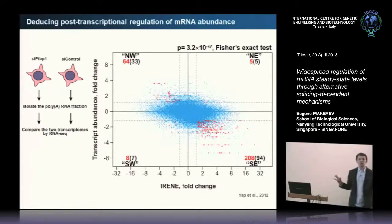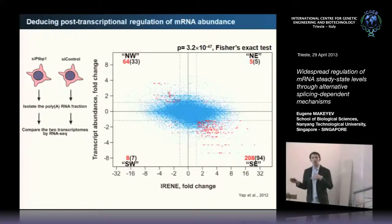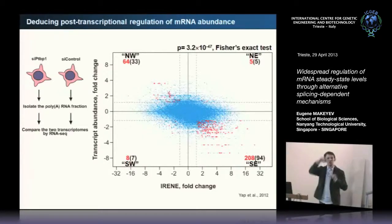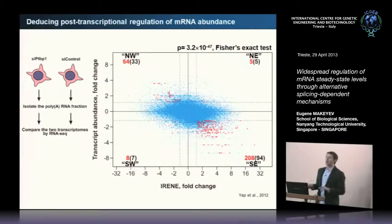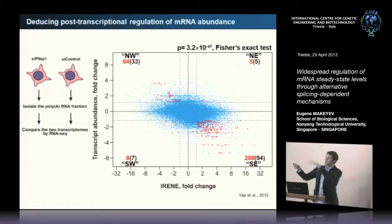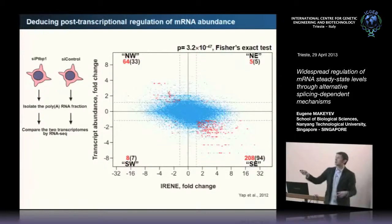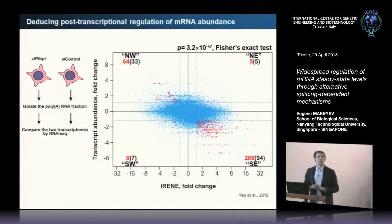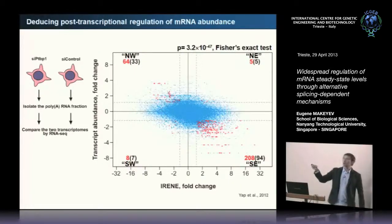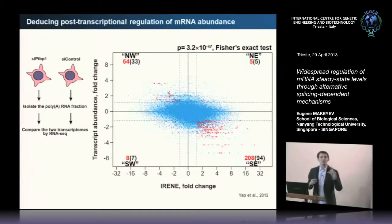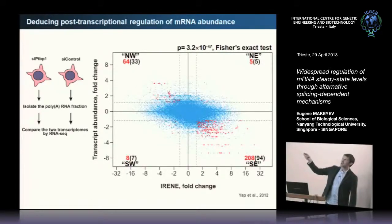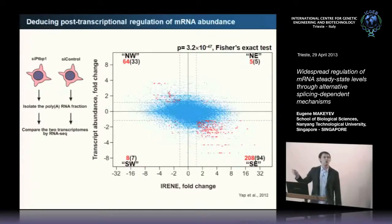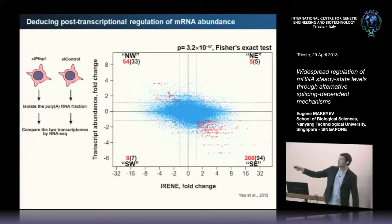So you have two statistics: one is just expression level, and the other is this statistic which tells you whether there is post-transcriptional regulation going on. You can plot changes in both statistics and compare between two samples. Some genes go up in transcript abundance, some go down, but there is also this other axis where the IRENE—the likelihood of a gene being regulated at a post-transcriptional level—also changes. Focusing on statistically significant events, you see this is biased towards the diagonal, and this is a highly significant bias.